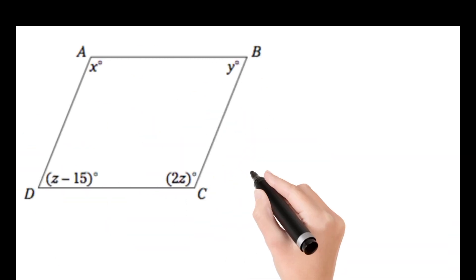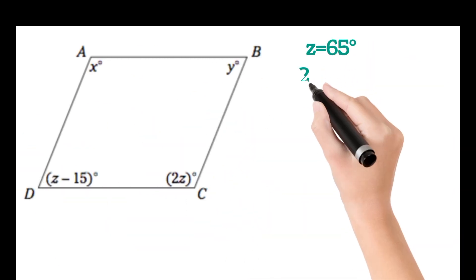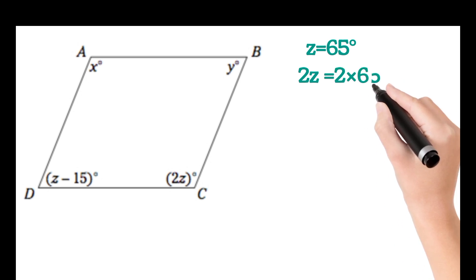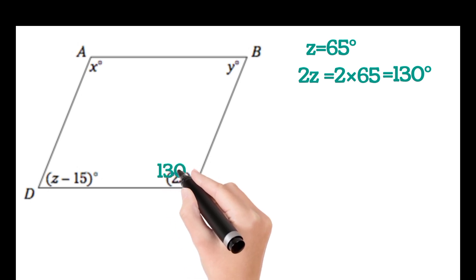We now have z is equal to 65 degrees. Now, 2z will be 2 times 65, that is 130 degrees. So this angle is 130 degrees.